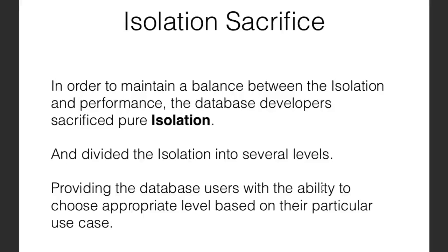So there is nothing like zero isolation or pure isolation in real-life databases. Instead there are different isolation levels from which users need to choose the best one for their particular use case. One simple fact to remember: isolation is inversely proportional to performance. The higher the level of isolation desired, the lower the performance of the database. When dealing with concurrent transactions, we need to choose the correct level of isolation so we are not sacrificing too much performance.